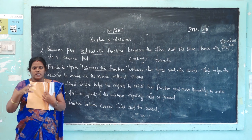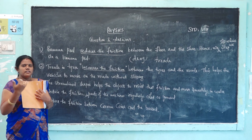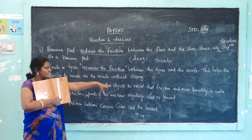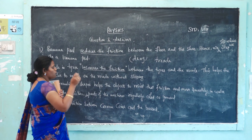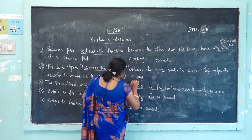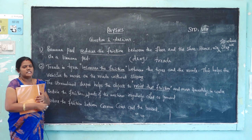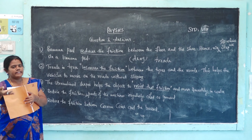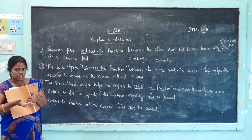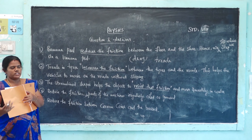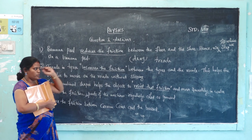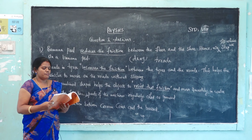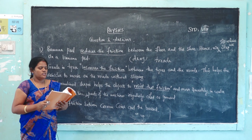Third: why are objects moving in water given a streamlined shape? The streamlined shape helps the object resist friction and move smoothly in water. The friction is reduced between the water surface and the body, so a streamlined shape allows the object to move smoothly through water.